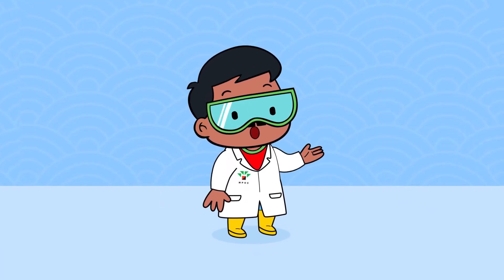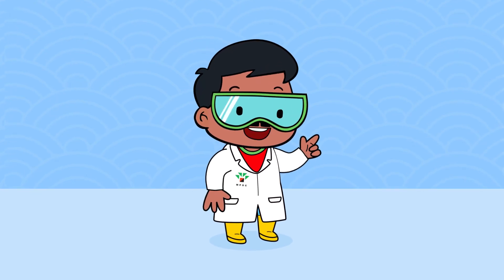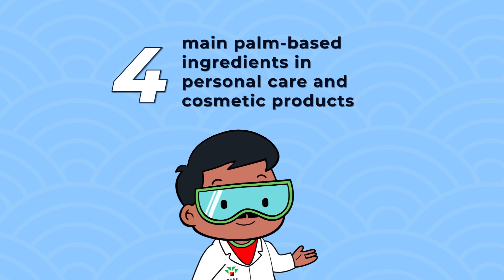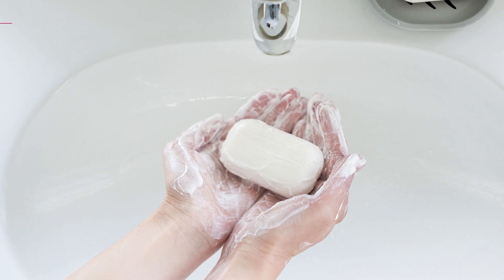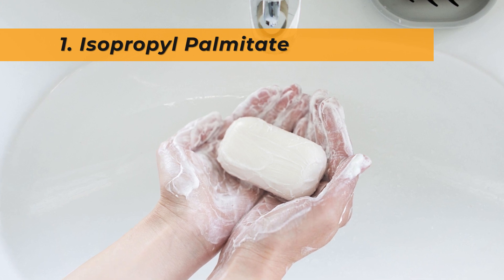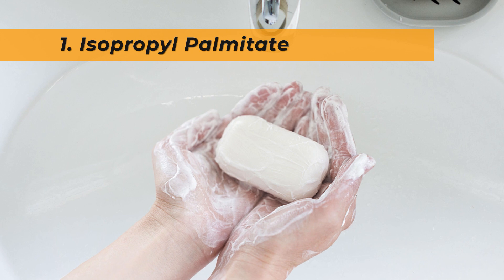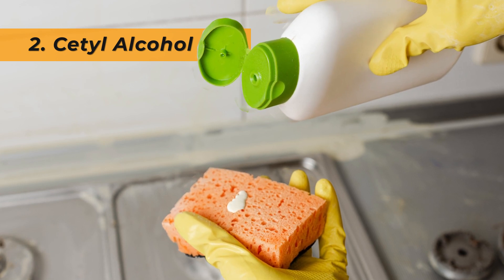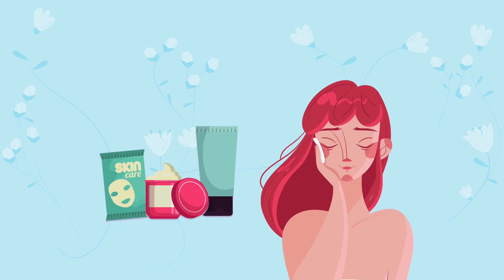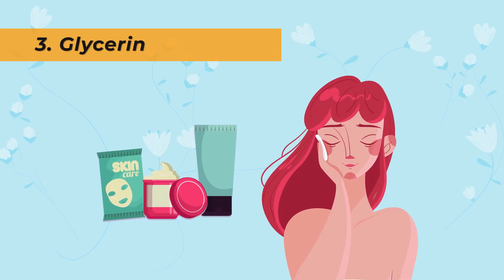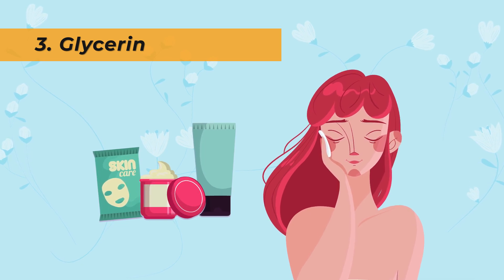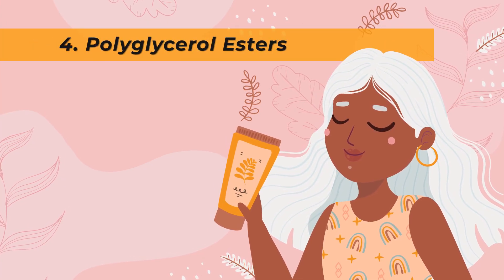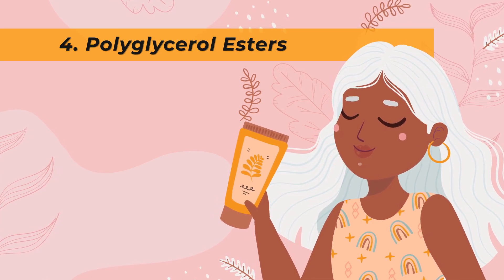Palm-based oleochemicals have properties which make them suitable for cosmetic and personal care applications. There are four main palm-based ingredients used in personal care and cosmetic products: isopropyl palmitate, used as an emollient that imparts shine and makes the skin softer; cetyl alcohol, mainly used as a surfactant to aid in the removal of oil and dirt; glycerin, added as a moisturizer to improve skin softness and maintain moisture content; and polyglycerol esters, which act as an emulsifier to keep oil-water mixtures from separating in finished products.